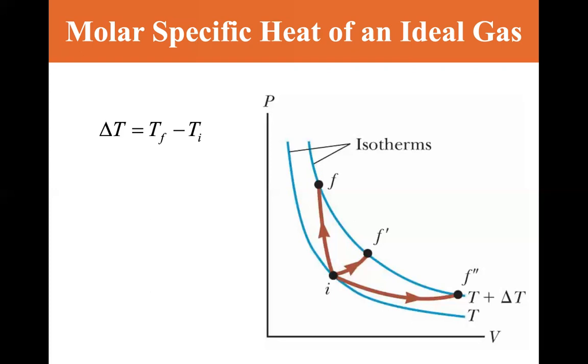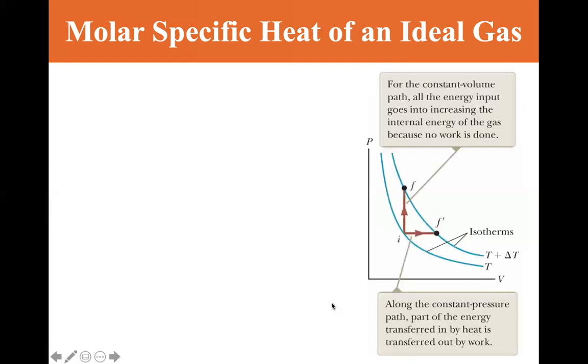For the constant volume path, all the energy input goes into increasing the internal energy of the gas because no work is done. If you remember the work is minus P delta V, well delta V is zero, then work is zero. So there's no work is done.